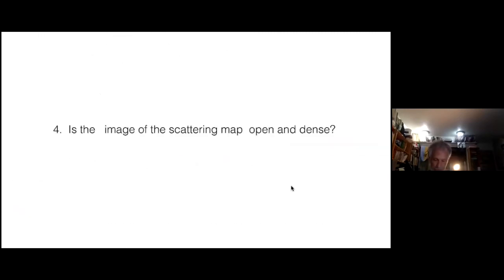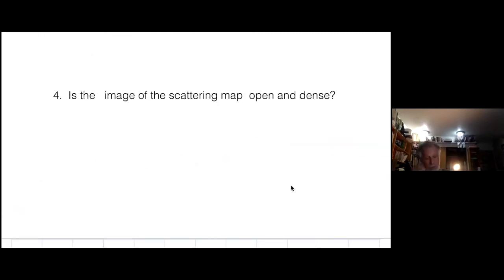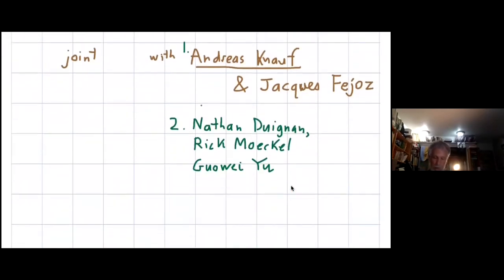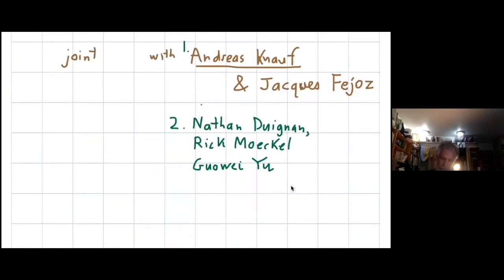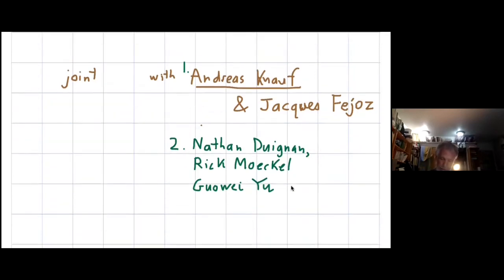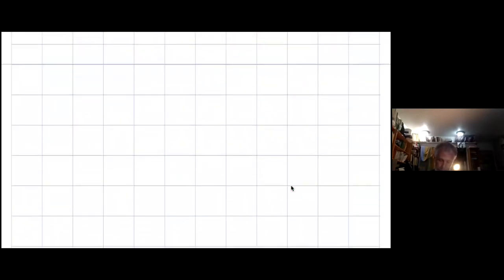Here's another picture of this thing I call the shape sphere, which will play a big role momentarily. The shape sphere is a way of looking at the quotient of the configuration space by the Galilean group. And now I'm going to jump ship. I'm going to go to the fourth problem with the remaining time. So the fourth problem is, is the image of the scattering map open and dense?